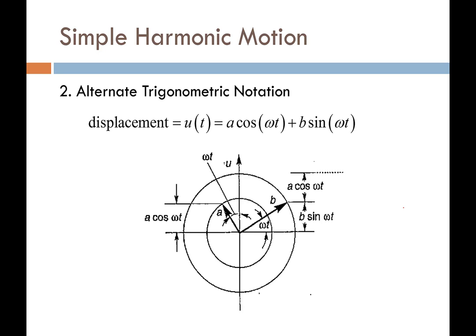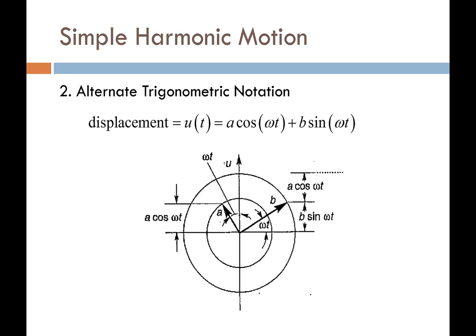We can represent this with our spinning vectors, but because we have two functions — a cosine wave and a sine wave — we need two vectors as well. This first vector represents our cosine wave and will have amplitude A. The second vector represents our sine wave and its amplitude is equal to B. We only care about the vertical components of these vectors — that's the real component, or the displacement component. These vectors are spinning, often in opposite directions, each at their respective angular velocities of omega. In this case we're showing that they're spinning at the same angular velocity. The summation of the vertical components of each of these vectors is therefore our displacement function. This is our rotating vector representation.